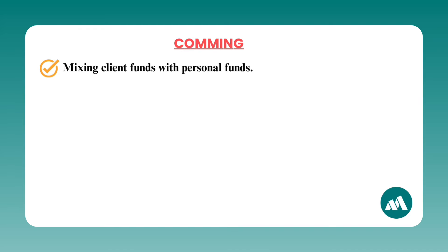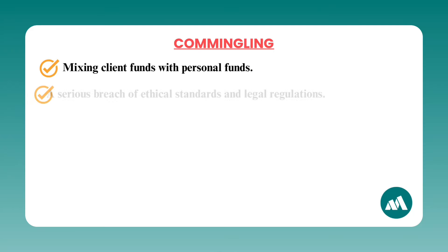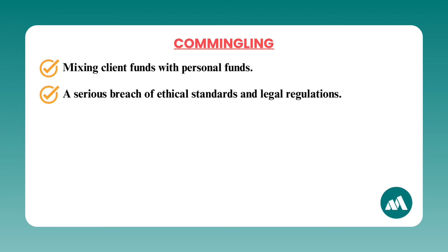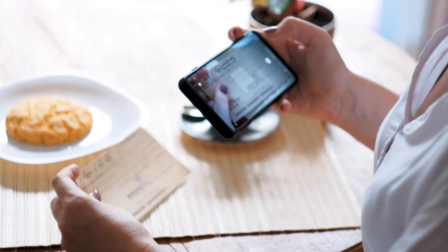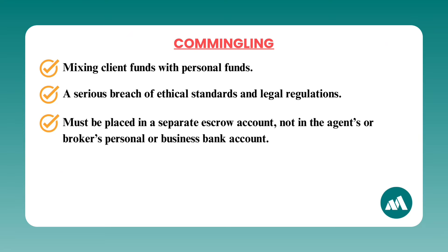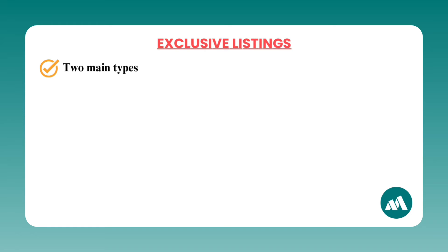Number eleven: commingling. Commingling refers to mixing client funds with personal funds, which is a big no-no in real estate. This is a serious breach of ethical standards and legal regulations. For example, if a buyer provides a deposit for a property, that money must be placed in a separate escrow account — not in the agent's or broker's personal or business bank account. Keeping funds separate protects both the agent and the client and ensures transparency in all financial transactions.